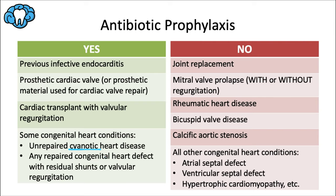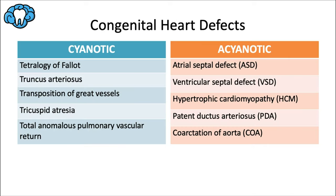Cyanotic heart disease results in a low blood oxygen level. Cyanosis refers to a bluish color of the skin and mucous membranes. Congenital heart defects may lead to pathological connections called shunts between the right and left heart chambers, allowing blood to flow along a pressure gradient from high pressure to low pressure. Cyanotic defects involve a right-to-left shunt where deoxygenated blood enters the systemic circulation, resulting in cyanosis.